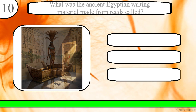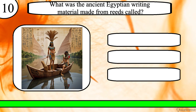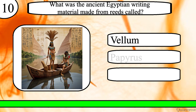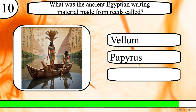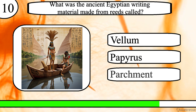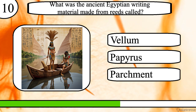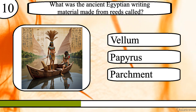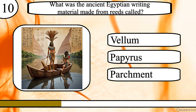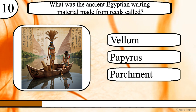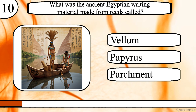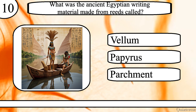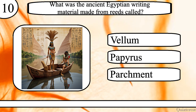Question 10. What was the ancient Egyptian writing material made from reeds called? Vellum, papyrus or parchment? The correct answer is papyrus.